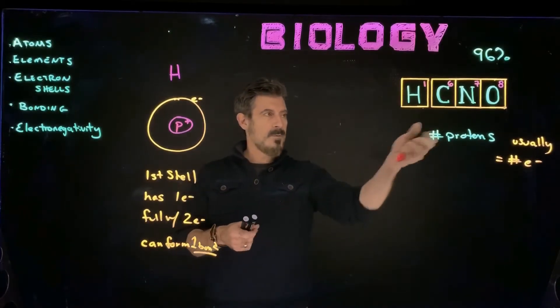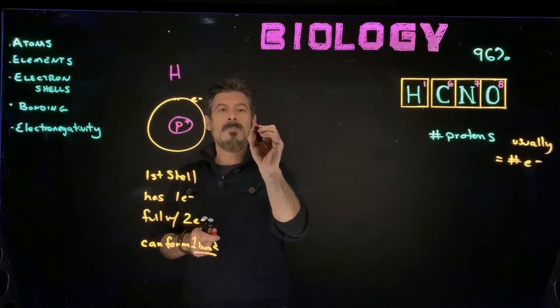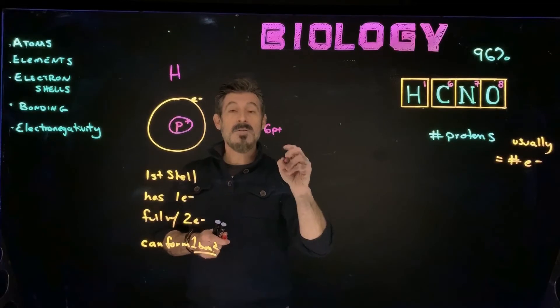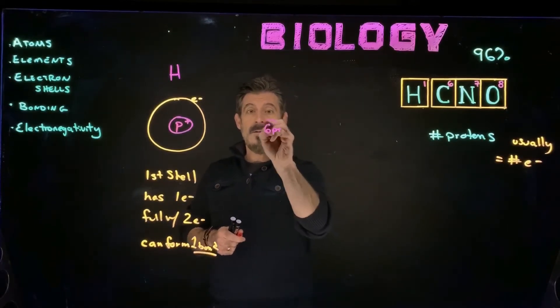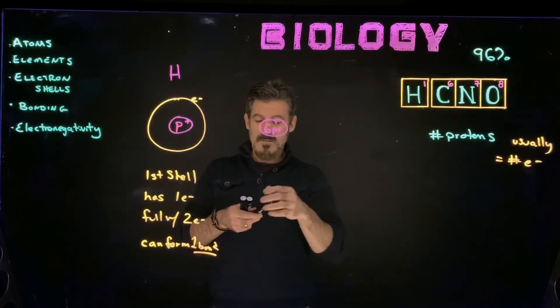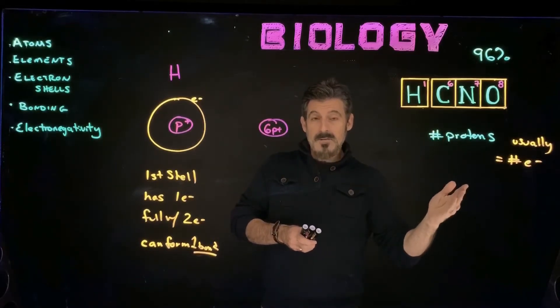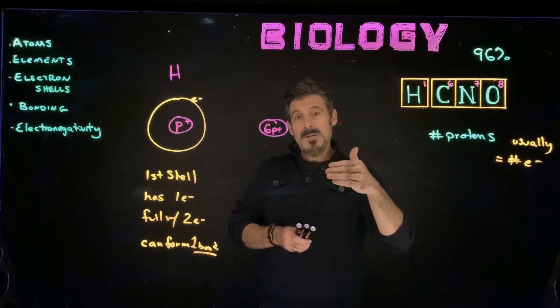And this is going to be the same as we go through these other elements here. So carbon, we're going to have six protons. It also has six neutrons here in the nucleus, but we're going to kind of leave them out. If it has different numbers of electrons, it would still be the same element, but it would be an ion.